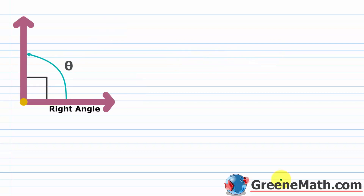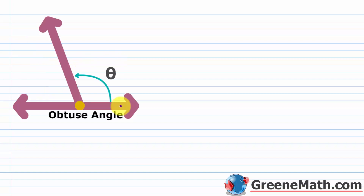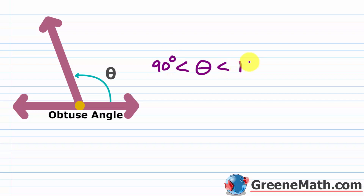We've all seen right angles, especially when talking about the Pythagorean formula. A right angle is denoted with a special square symbol, and the angle is exactly 90 degrees — so theta equals 90 degrees. Next is an obtuse angle, which is greater than 90 degrees but less than 180 degrees. So theta is greater than 90 degrees but strictly less than 180 degrees.